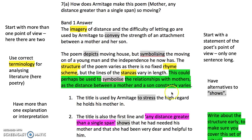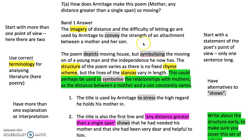Let's look at the actual essay and work out why this candidate has got a hundred percent. I've separated some parts of the answer so you can see what these points refer to. Start with more than one point of view - here there are two: the imagery of distance and the difficulty of letting go, used by Armitage to convey the strength of an attachment between a mother and son. So there are two things he's looking at here - the difficulty of letting go and the strength of an attachment - both done really economically in one sentence, two ideas.